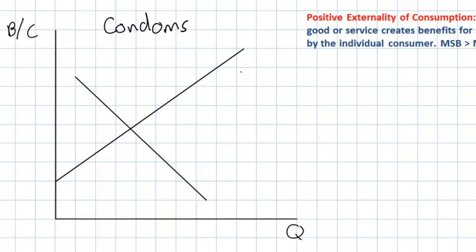We're going to be discussing a consumption externality today. Therefore, the marginal private cost equals the marginal social cost. In other words, there are no external costs in the manufacturing or production of condoms. However, in the consumption or the use of condoms, there are external benefits. So let's label this demand curve as the marginal private benefit. This represents the welfare enjoyed by the consumers of condoms.